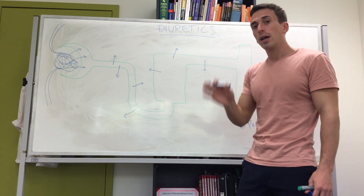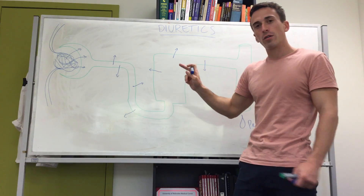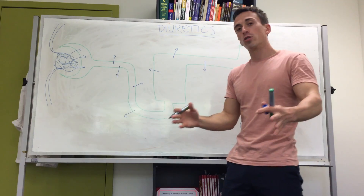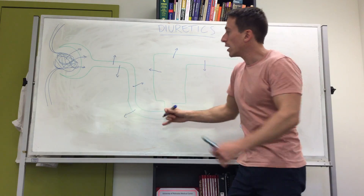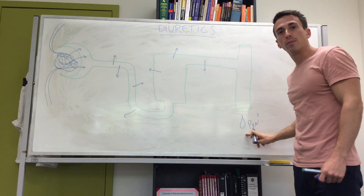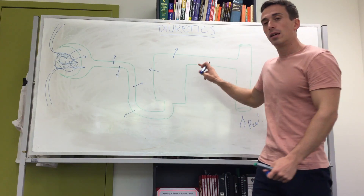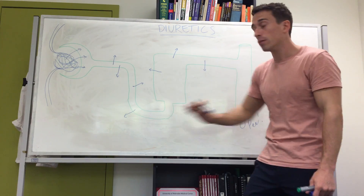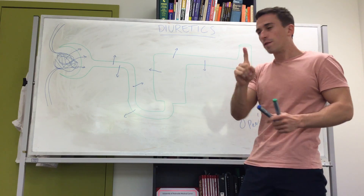Predominantly, the way these diuretics work is by telling sodium to stay within the lumen of the nephron. Because wherever sodium goes, water follows — so sodium stays within the nephron, it pulls water in with it, and therefore there's more urine output. They act in different areas, giving them slightly different mechanisms of action, but predominantly they work by keeping sodium within the tube and pulling water in.